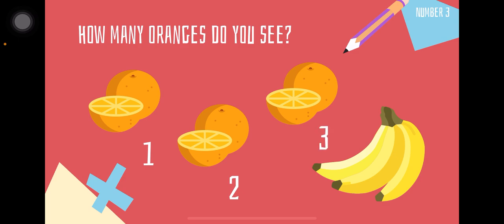Do you see these oranges? Let's count the oranges: one, two, three. Very good! We didn't count the banana because we only want the oranges.